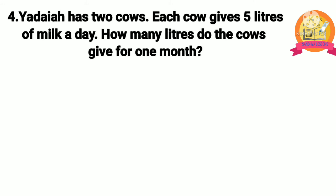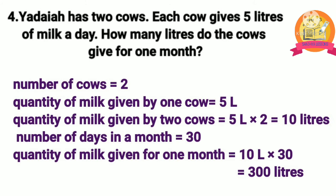Fourth problem: Yadaya has 2 cows. Each cow gives 5 liters of milk a day. How many liters do the cows give for 1 month? Solution: number of cows is 2. Quantity of milk given by 1 cow is 5 liters. Quantity given by 2 cows is 10 liters. Number of days in a month is 30. Quantity for 1 month is 10 liters multiplied by 30, which equals 300 liters. Therefore, quantity of milk given for 1 month is 300 liters.